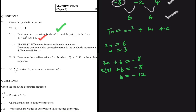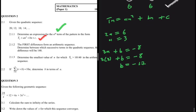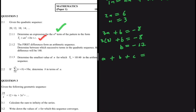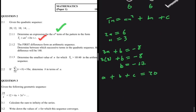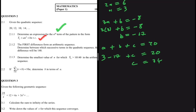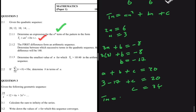Now we just need C. We use A + B + C = T1, the first term of the quadratic sequence, which is 20. So 3 + (minus 17) + C = 20. Since 3 minus 17 is minus 14, taking minus 14 to the right-hand side gives C = 34. Therefore Tn = 3n² minus 17n plus 34.